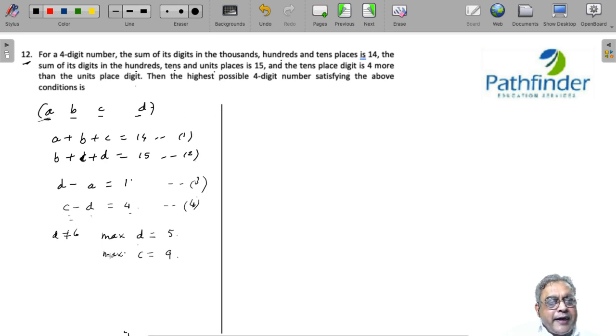Because 9 minus 5 gives you 4, and only when d is maximum can you get a as maximum. So maximum possible value of a is d minus 1, which is equal to 5 minus 1 or 4. So now we have got the values of a, c and d as 4, 9 and 5.